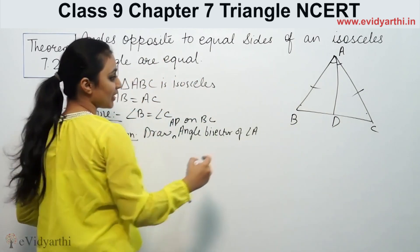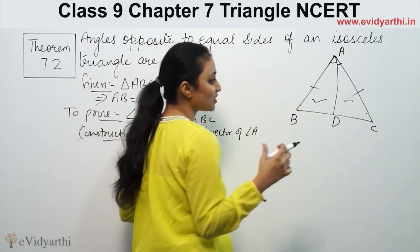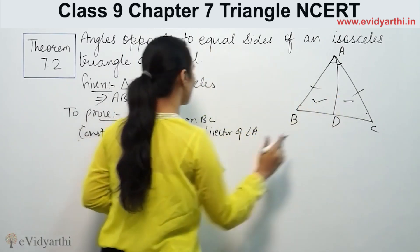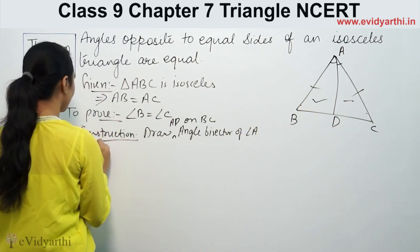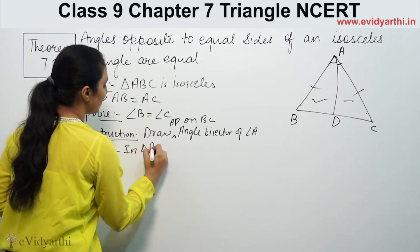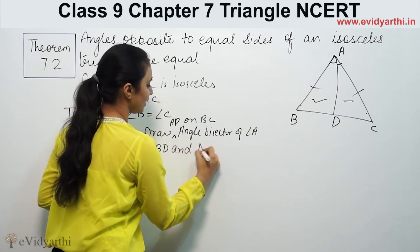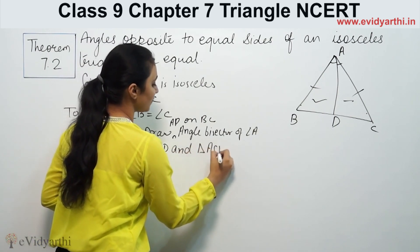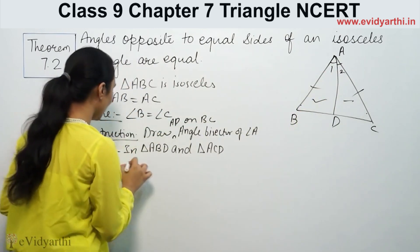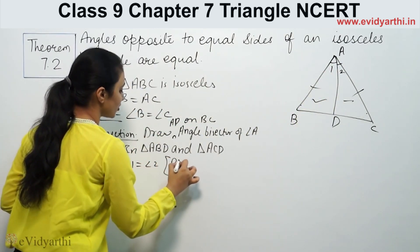Now we will show the two triangles are congruent. We will work with triangle ABD and triangle ACD. First, angle 1 equals angle 2 by construction, since AD is the angle bisector of angle A.